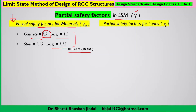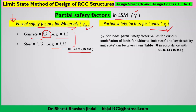Next is the partial safety factor for loads, denoted by gamma_f. The partial safety factor value varies for different combinations of loads — for ultimate limit state and serviceability limit state. Different load combinations require different partial safety factors for both limit states. This information is available in table number 18 and clause number 36.4.1 of IS456.